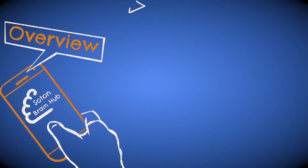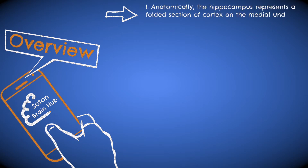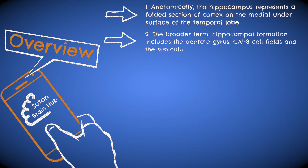Anatomically, the hippocampus can be found on the medial under surface of the temporal lobe as a folded section of the cortex. Make sure you can identify it on a specimen in the lab. The broader term 'hippocampal formation' also refers to the dentate gyrus, the subiculum, and the CA1-3 cell fields — a series of cornu ammonis areas filled with densely packed pyramidal cells.